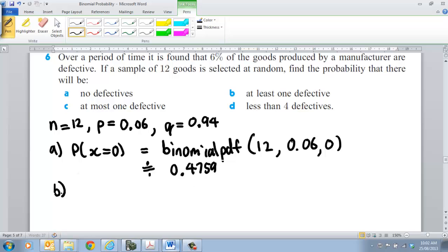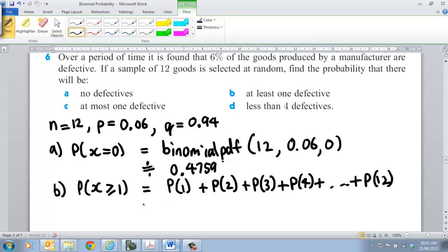Let's quickly get through this. Part B: at least one defective. So probability that X is greater than or equal to one. So that would be equal to, if we did the old fashioned way, the probability of getting 1 plus probability of getting 2 plus probability of getting 3 plus probability of getting 4, dot dot dot, up to the probability of getting 12 defective. Do you see that it'd be fairly tedious?